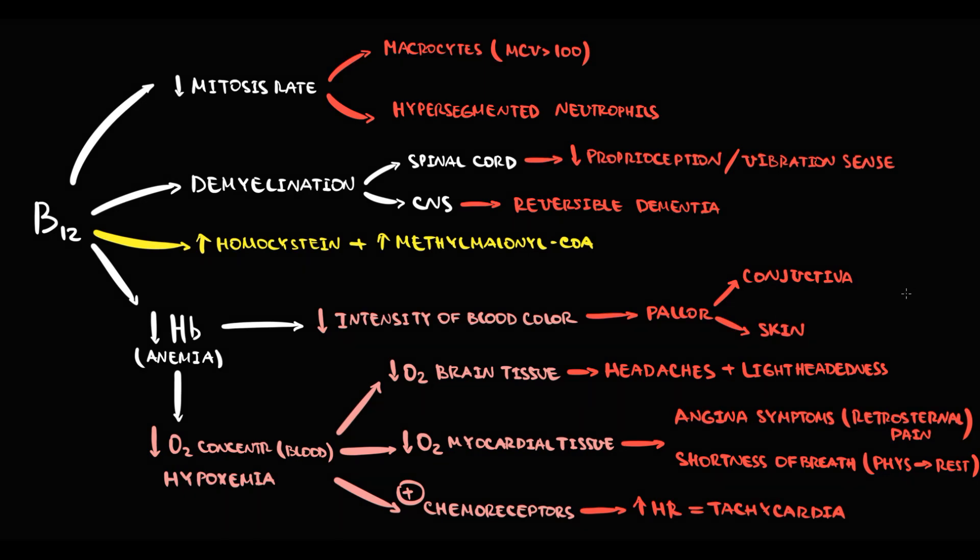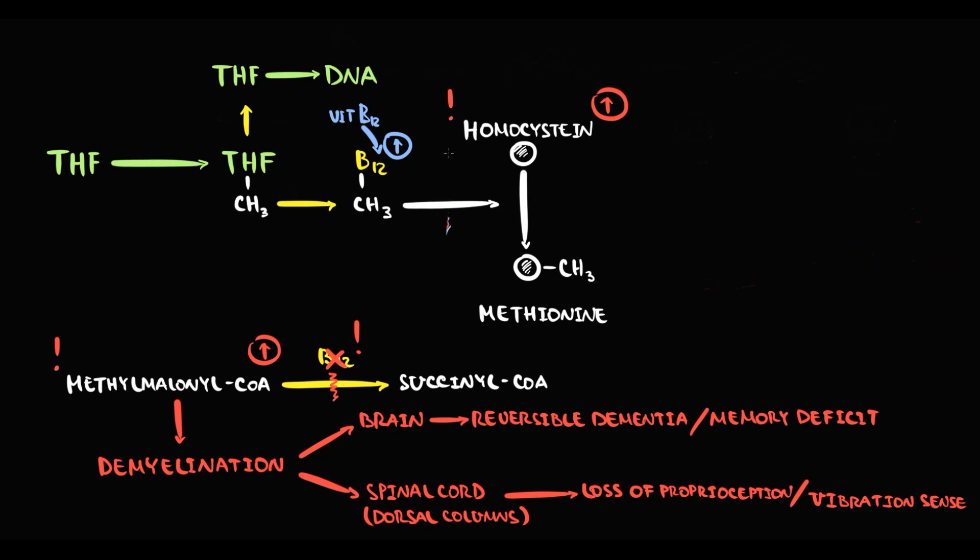For treatment, we use vitamin B12 injections to compensate the deficiency. First of all, with normalization of vitamin B12, we increase the amount of free folate acid level, and thereby we correct anemia. Also, we normalize the level of homocysteine, and in addition to this, we make possible again the conversion of methylmalonyl-CoA into succinyl-CoA.